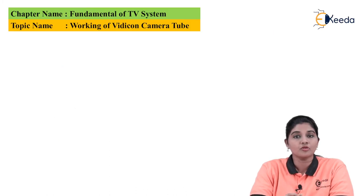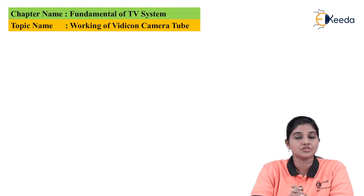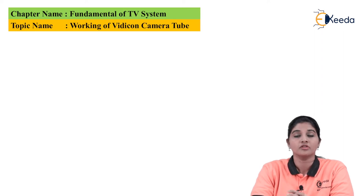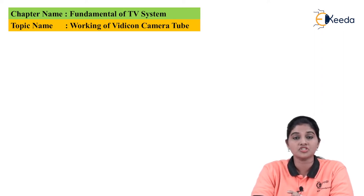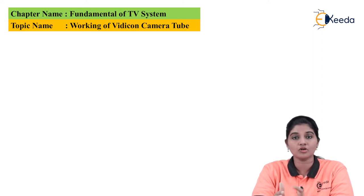Camera tube is basically considered as the eye of the TV system because it captures the image and converts it into electrical form, which is then transmitted using a transmitter. Different types of camera tubes are available in the market and the major three types are Image Orthicon camera tube, Vidicon camera tube, and Plumbicon camera tube.